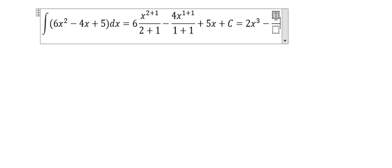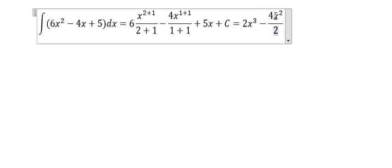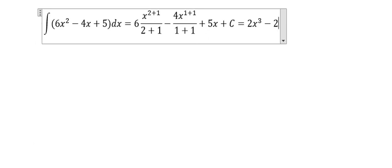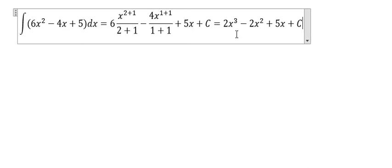Now for -4x, we have 4x power 2 over 2. 4 divided by 2 equals 2, so we have 2x power 2. Plus 5x plus C. Here is the final answer: 2x³ - 2x² + 5x + C.